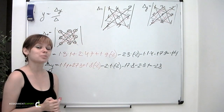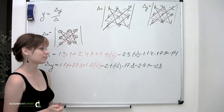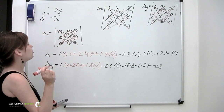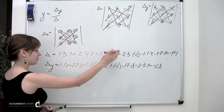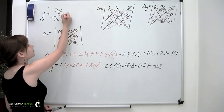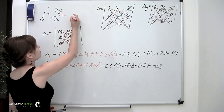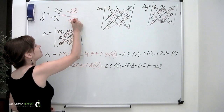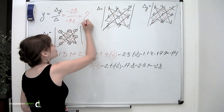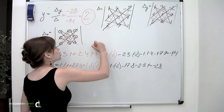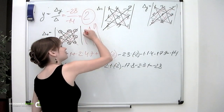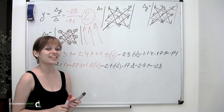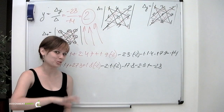Recalling what Cramer's rule suggests, and with the formula already written on the board, we substitute the numbers: minus 28 divided by minus 14, which gives us the answer of 2. Ta-da! You can easily calculate x and z using the same method. Enjoy!